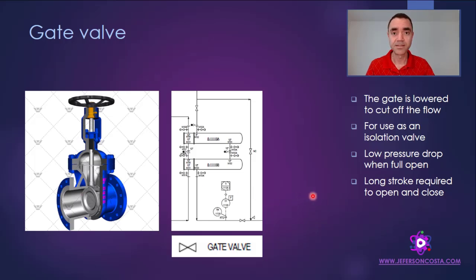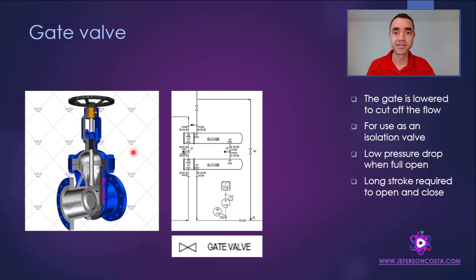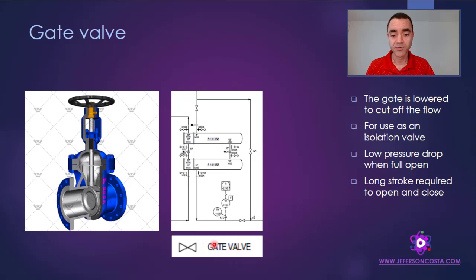On the other hand, there is a long stroke required to open and close the gate valve — meaning many turns of the handwheel are needed to go from closed to open. Because of that, it is not typically used for controlling fluids, although a gate valve can be used for throttling. In terms of P&ID, here you can see the most used symbol for representing a gate valve. In this system, we can see a gate valve upstream of a bundle of heat exchangers, and also in the bypass labeled NC.